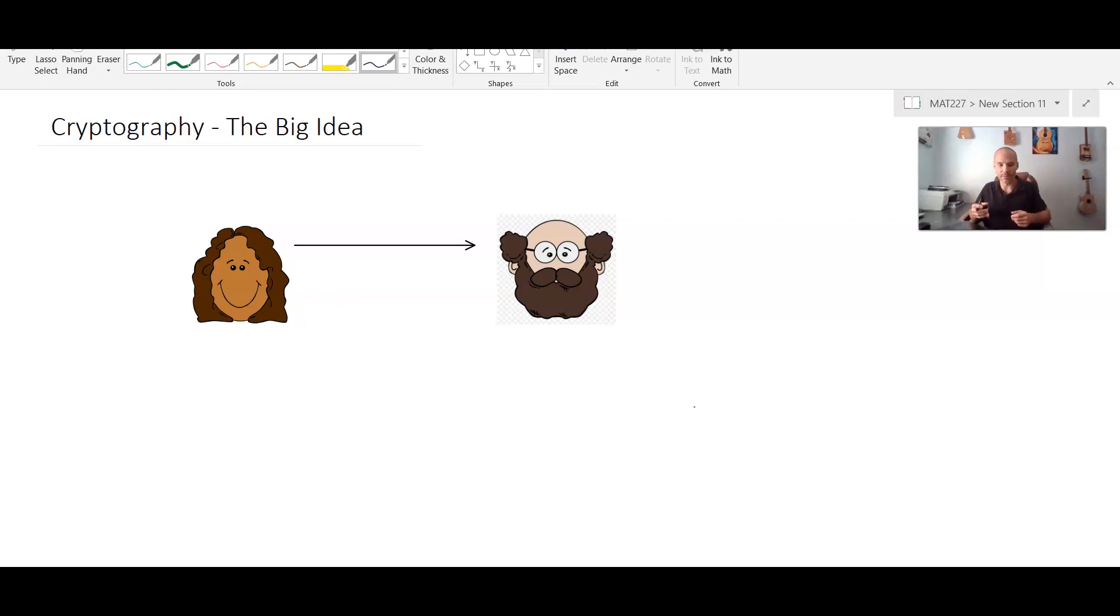So the friend puts that message in the box, puts the lock on, he doesn't have the key and now ships it back to you physically. You're the only one with the key so you're the only one that could in theory unlock it.